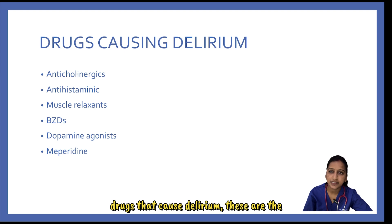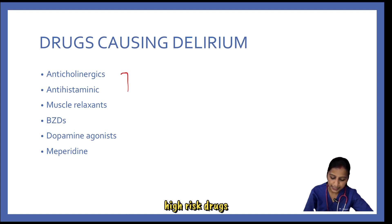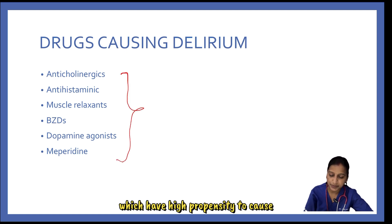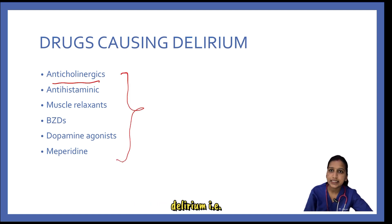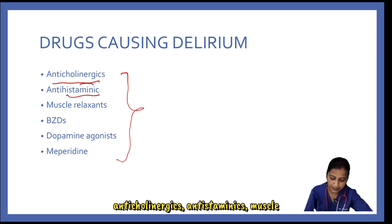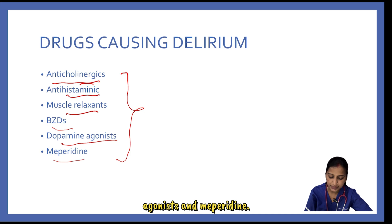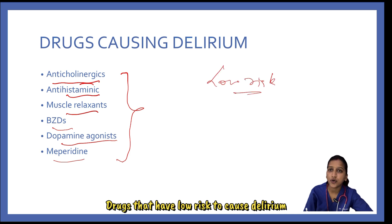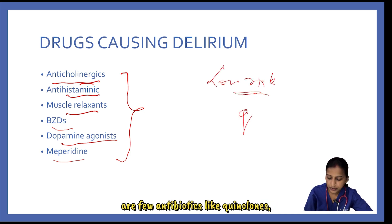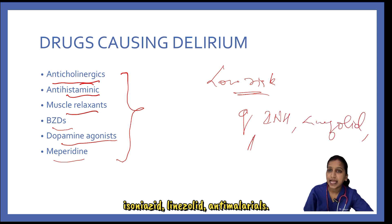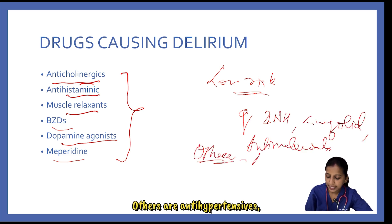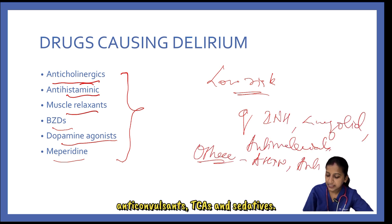Coming to drugs that cause delirium: high-risk drugs with high propensity to cause delirium include anticholinergics, antihistaminics, muscle relaxants, benzodiazepines, dopamine agonists, and meperidine. Drugs with low risk include a few antibiotics like quinolones, isoniazid, linezolid, and antimalarials. Others include antihypertensives, anticonvulsants, TCAs, and sedatives.